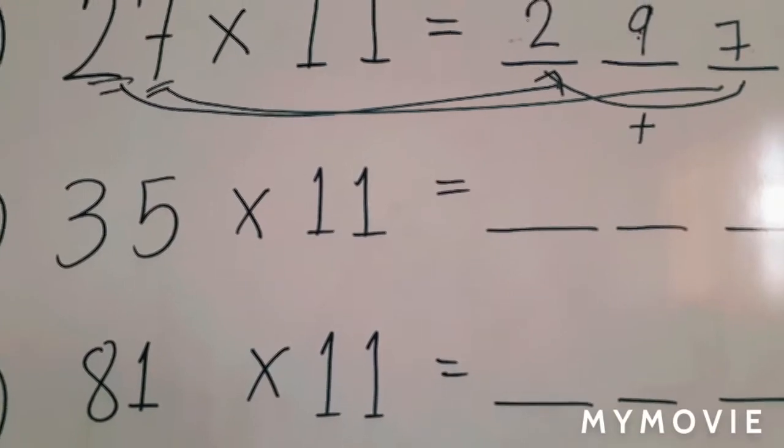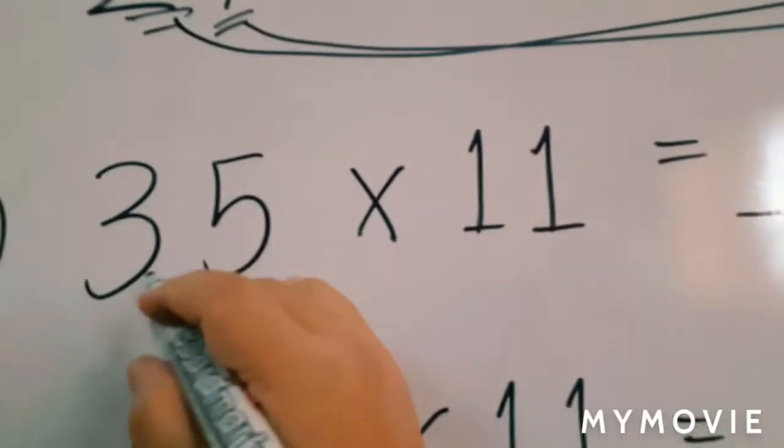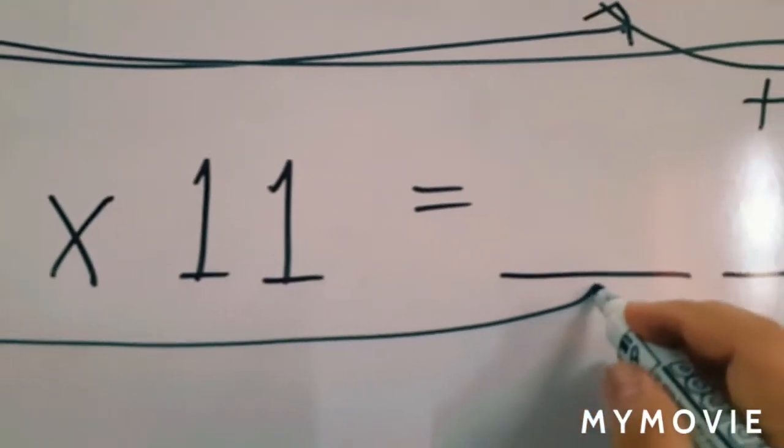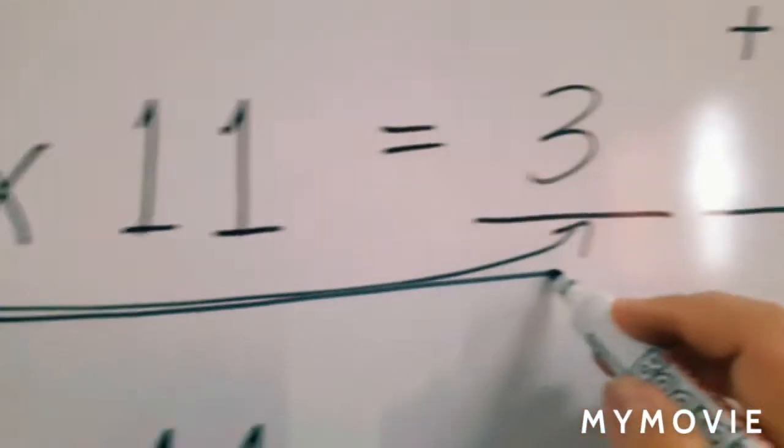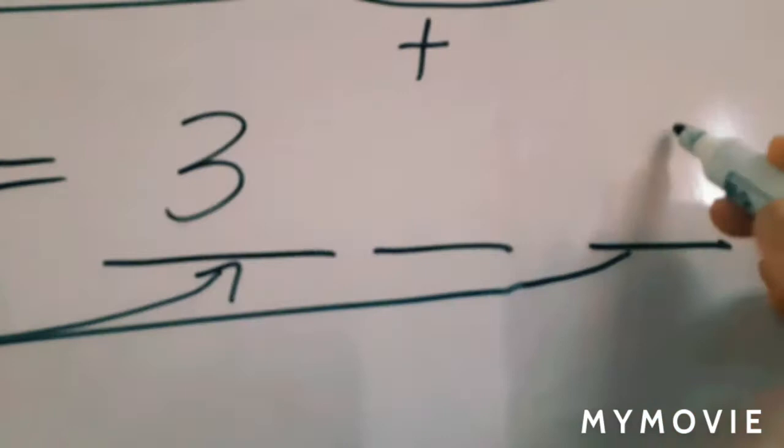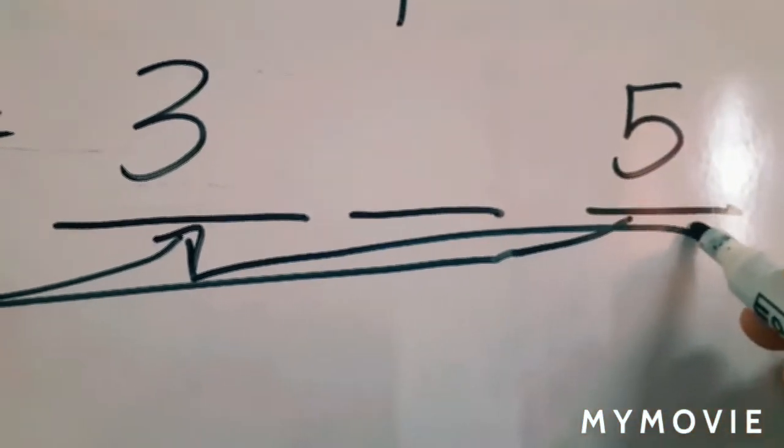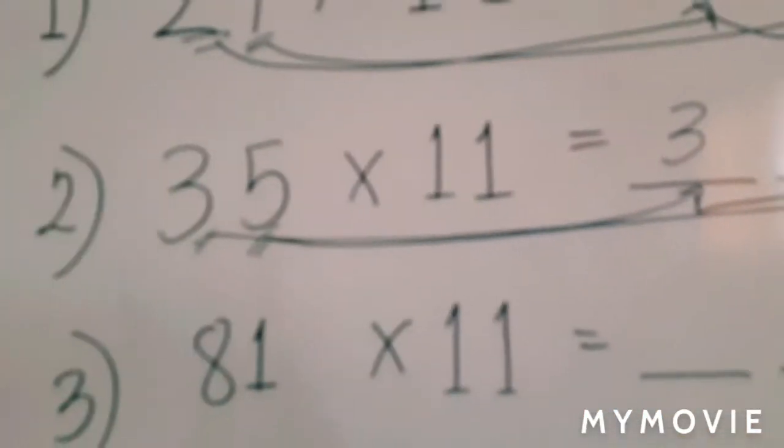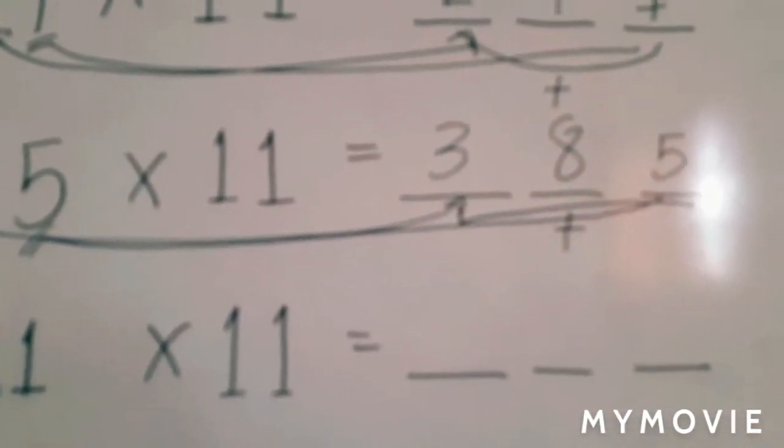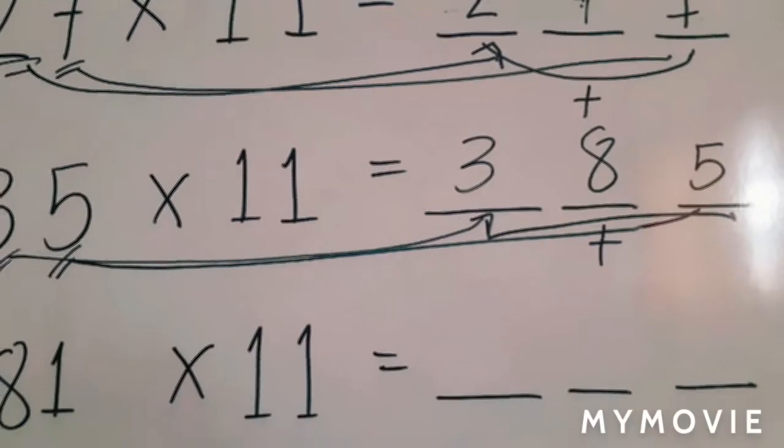Next, let's multiply 35 times 11. Copy 3 as our first digit and 5 as the last digit of our answer. And we simply add the first digit and the last digit. 3 plus 5 is 8. Therefore, 35 times 11 is 385.